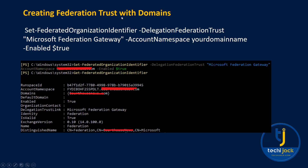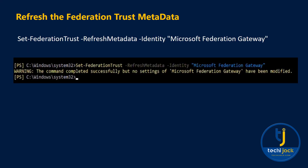Once the TXT record is propagated, the next step is to create the federation trust with the domain. Run the commandlet Set-FederatedOrganizationIdentifier. You can see the command in action — you will see the account namespace, your domain, and any other domains. This reassigns your domain to the federation trust.